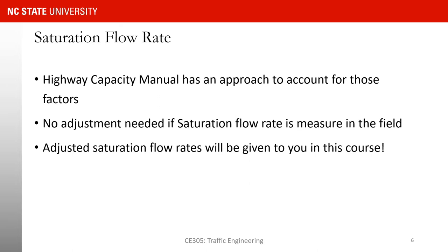The Highway Capacity Manual has an approach that accounts for all of these factors. You start from a base saturation flow rate, and there are 10 or 11 adjustment factors defined for each of the parameters we discussed. They adjust the saturation flow rate from that base value. If we are measuring saturation flow rate in the field, we don't need to make any adjustments. But if we are using the Highway Capacity Manual, we need to go through all of those adjustments. In this course, the adjusted saturation flow rate will always be given to you.